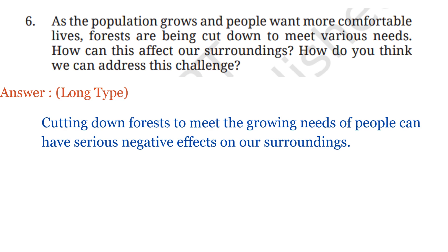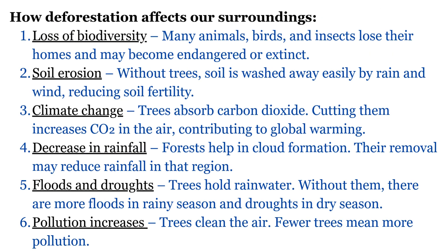The long type answer — how deforestation affects our surroundings: Loss of biodiversity — many animals, birds, and insects lose their homes and may become endangered or extinct. Soil erosion — without trees, soil is washed away easily by rain and wind, reducing soil fertility. Climate change — trees absorb carbon dioxide; cutting them increases CO2 in the air, contributing to global warming. Decrease in rainfall — forests help in cloud formation; their removal may reduce rainfall. Floods and droughts — trees hold rainwater; without them, there are more floods in rainy season and droughts in dry season. Pollution increases — trees clean the air; fewer trees means more pollution.